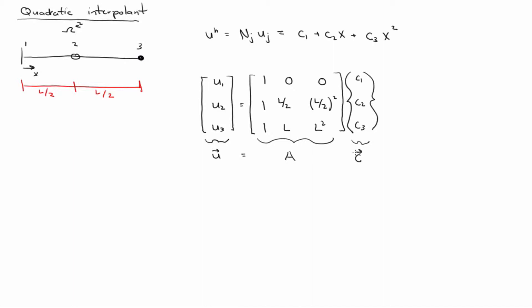So everybody know where I got a, right? I just evaluated my approximate, my interpolant, c1 plus c2 x plus c3 x squared at each of the nodes. So at node 1, x is 0, so I get 1, 0, 0. At node 2, it's l over 2, so I get 1, l over 2, l over 2 squared. Just plugging in the x location of node 2 into that equation at the top. And I just construct this A matrix.